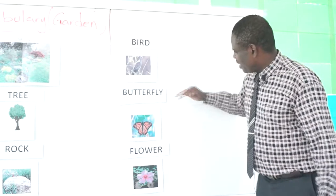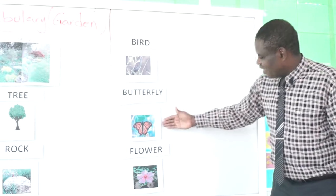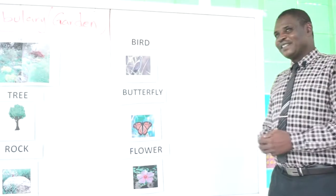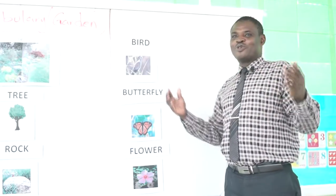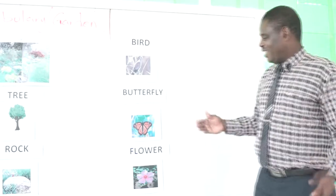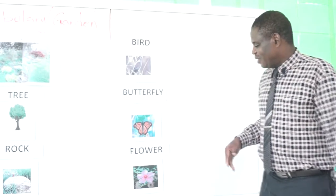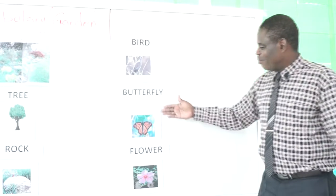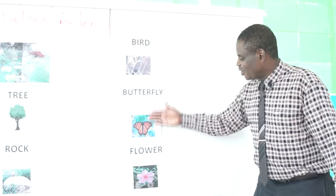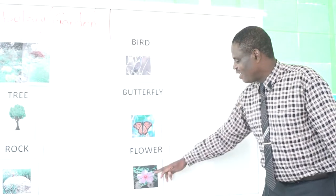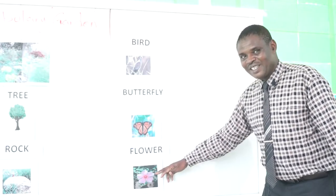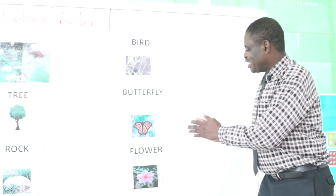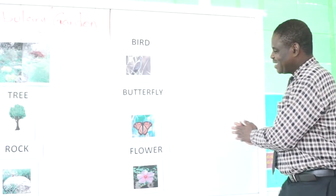Okay, now we are on butterfly. As you can see, butterfly is very common when we go to the garden. Wherever you find butterfly, you can easily find flower. So we say the butterfly is on the flower, and you can see the flower under the butterfly.